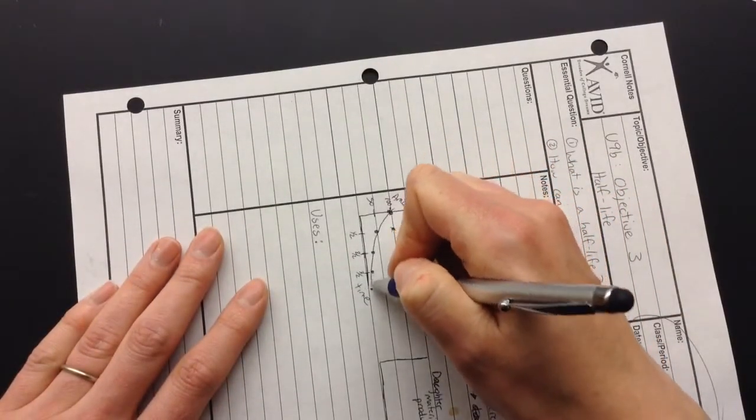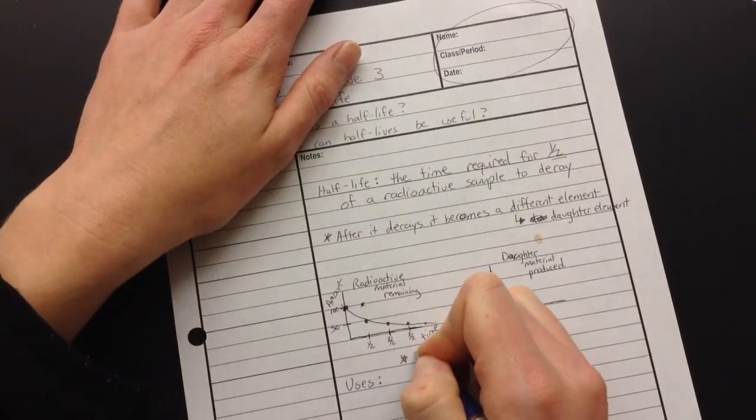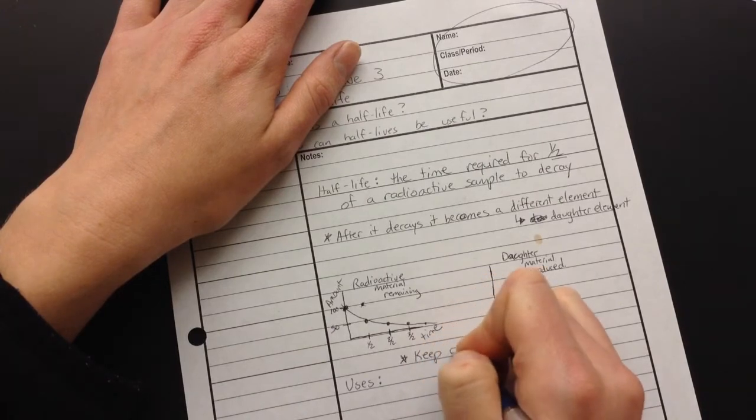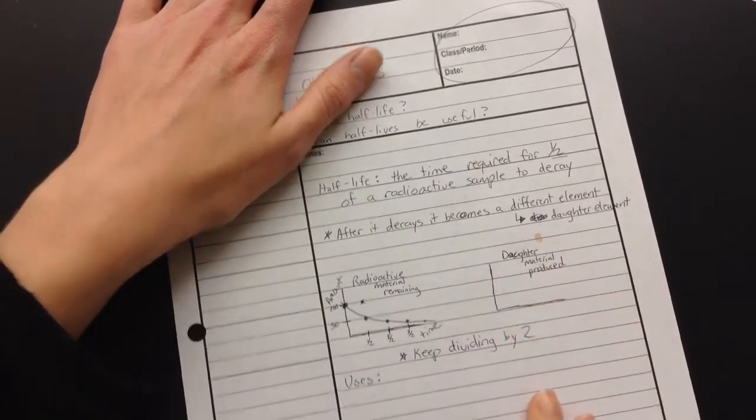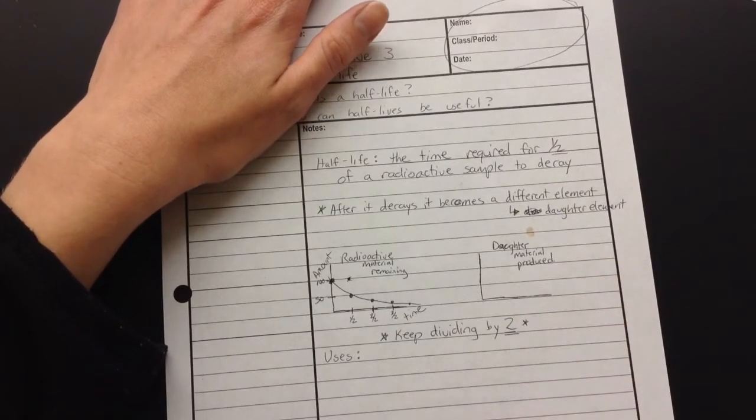So our graph ends up being a curve. And I'm going to write that note. You just keep dividing by two. That's why it's called a half-life. We're dividing by two repeatedly.